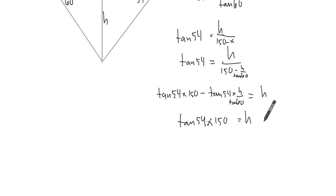Now I have h, and this comes over here, plus tan 54 over tan 60 times h. In other words, h times 1 plus tan 54 over tan 60.